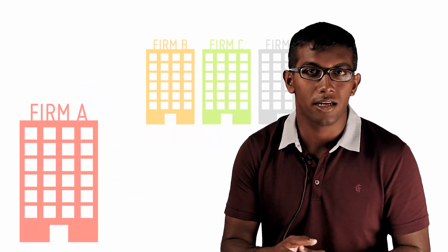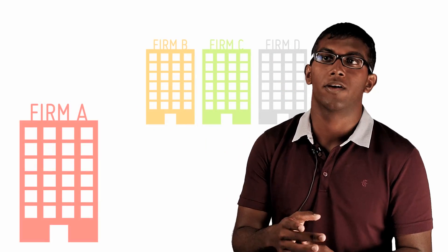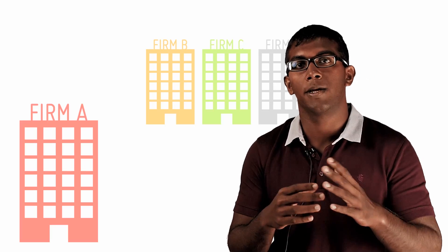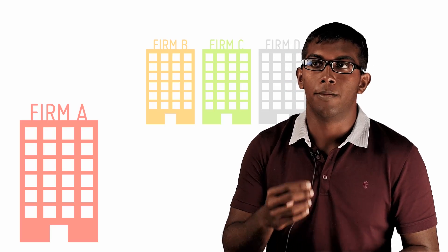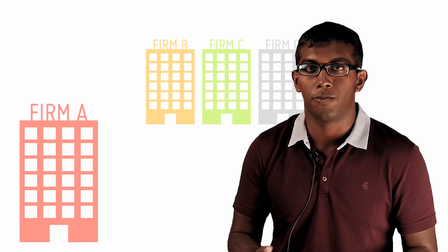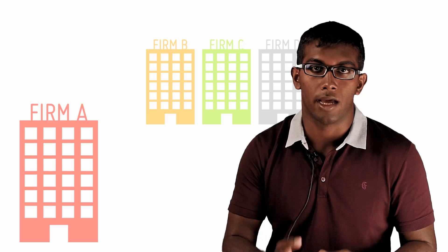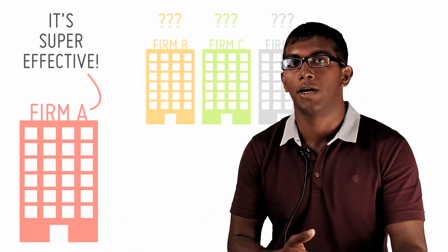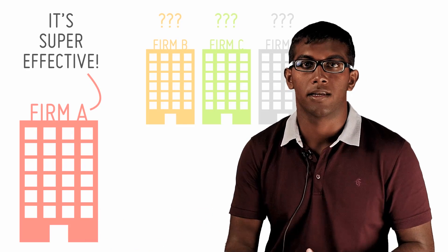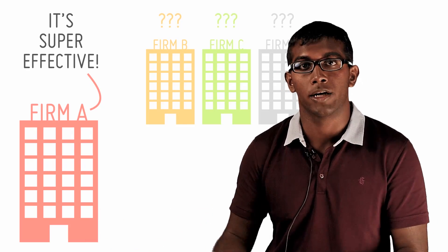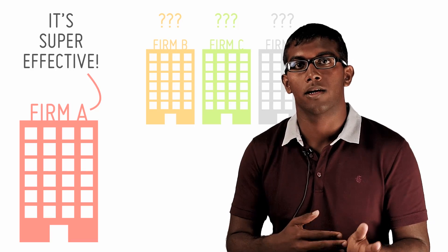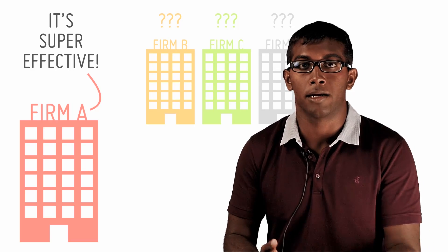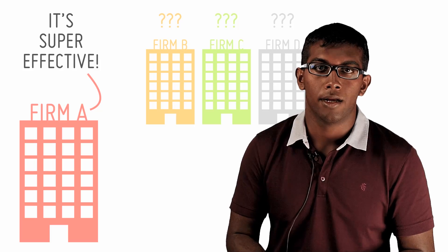Imperfect information can also occur in terms of imperfect competition, as firms may not be aware, for example, of the most efficient method of producing a certain good, as compared to another firm which has a super effective method that is lowering their costs. This can cause friction in the market, and it's another barrier to entry.